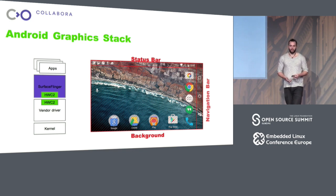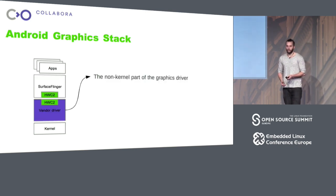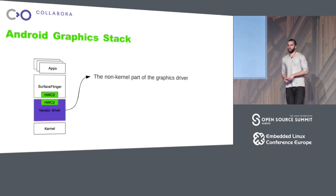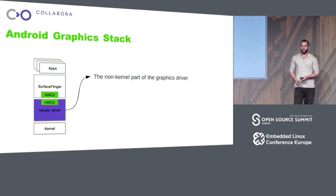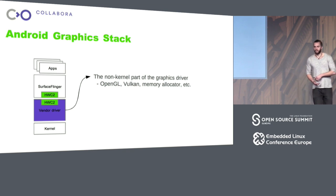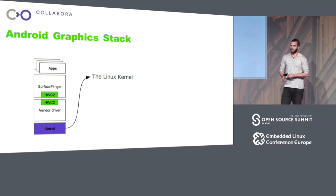These layers and the composition of them is communicated through the HWC2 API. Below Surface Flinger, we have the non-kernel parts of the graphics driver. For various reasons like security and convenience, graphics drivers don't entirely live in kernel space. This is also where OpenGL, Vulkan, and memory allocators and such are implemented. In the case of Android, it's also where the HWC2 API is implemented. And at the bottom of the stack, we find the kernel.